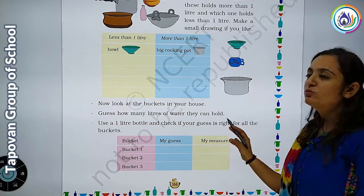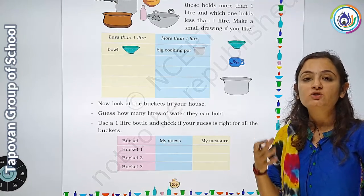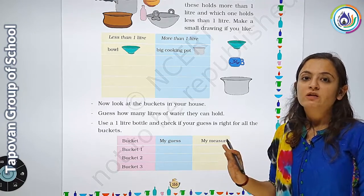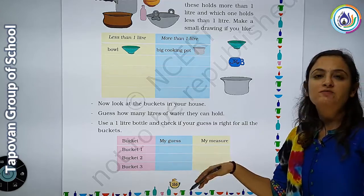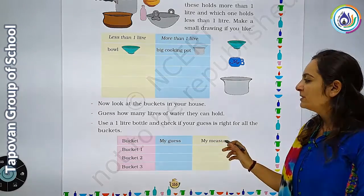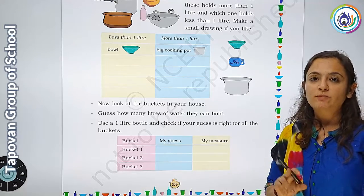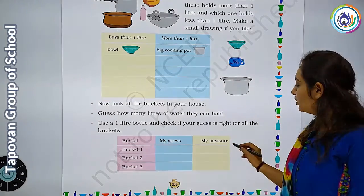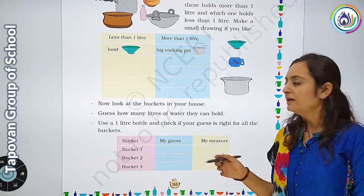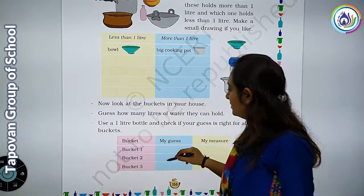What you have to do is measure your bucket with the help of a 1-liter bottle. I will measure a bottle of 1 liter. What should I write? First, I will write my guess — I think it will be 6 liters, 7 liters, 12 liters — and after that, I will verify using the 1-liter bottle.